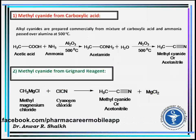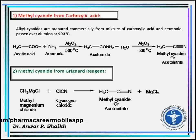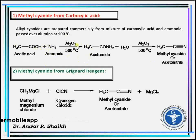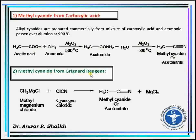First method: by using carboxylic acid. For example, acetic acid reacts with ammonia with removal of a water molecule in the presence of alumina at 500 degrees centigrade to form acetamide, which upon further removal of another water molecule under alumina again at 500 degrees centigrade forms methyl cyanide.